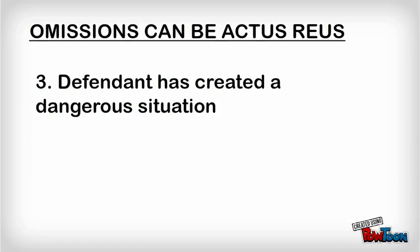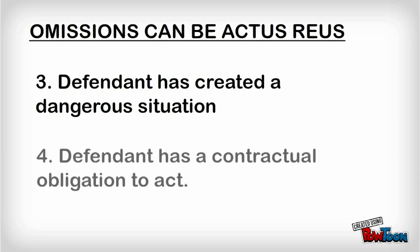Now, let's look at each of these four kinds of omission in turn. Firstly, where a special relationship exists.